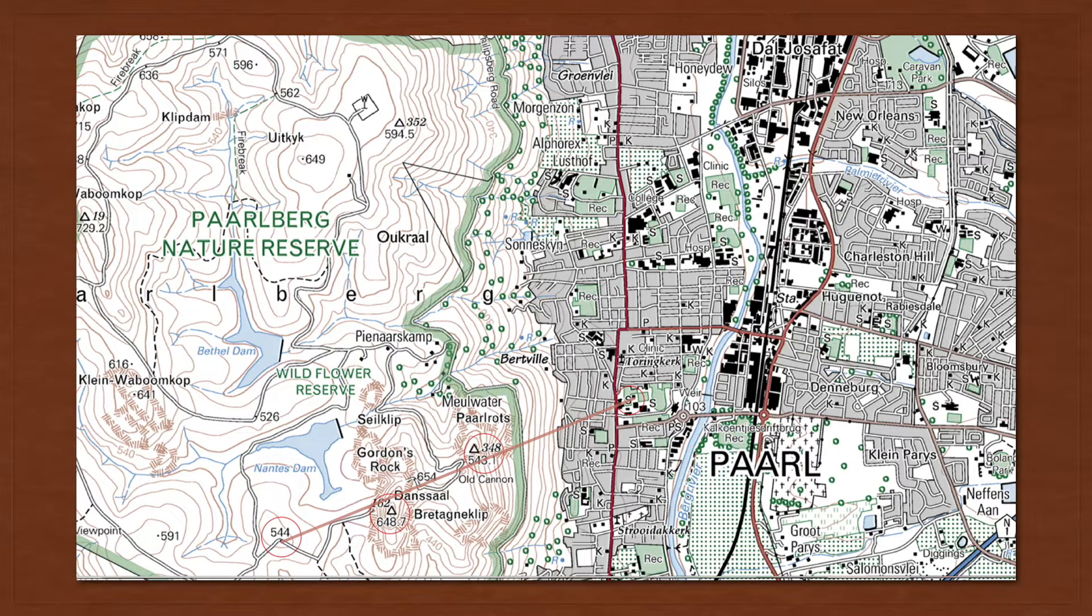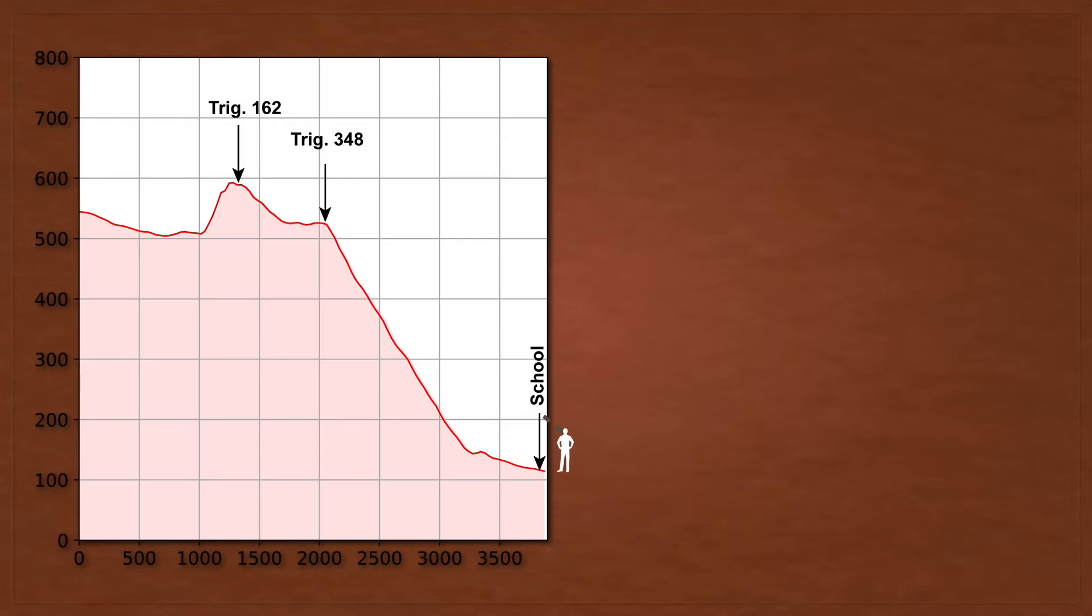Now let's look at the cross-section, because a cross-section is very good at helping you to see intervisibility. So if you stood at the school, you'd be able to see the mountain marked by Trigbeacon 348. And so that's quite visible.